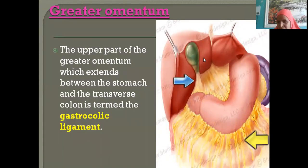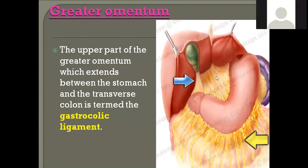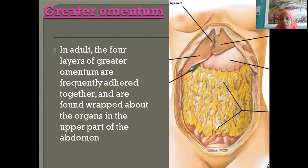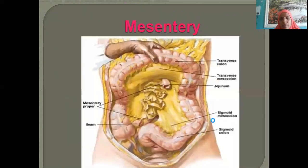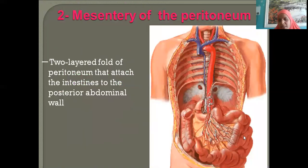The inferior aspect of the liver connects to the lesser curvature of the stomach — that fold of peritoneum is the lesser omentum. From the greater curvature we see the coils of small intestine; once you lift the greater omentum, you will see many coils of small intestines, and that fold of peritoneum will be the mesentery.